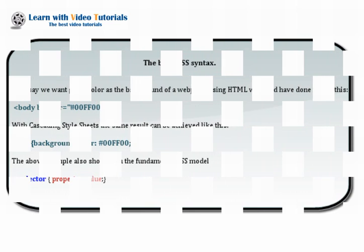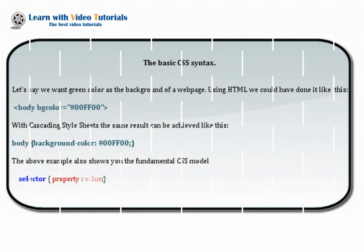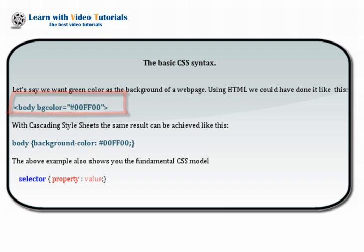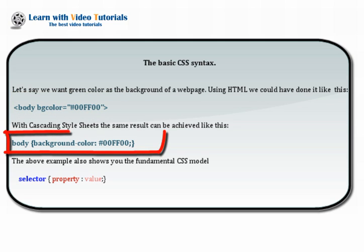The basic CSS syntax. Let's say we want green color as the background of a web page. Using HTML we could have done it like this: body bgcolor equals #00FF00. With cascading style sheets, the same result can be achieved like this: body { background-color: #00FF00; }.